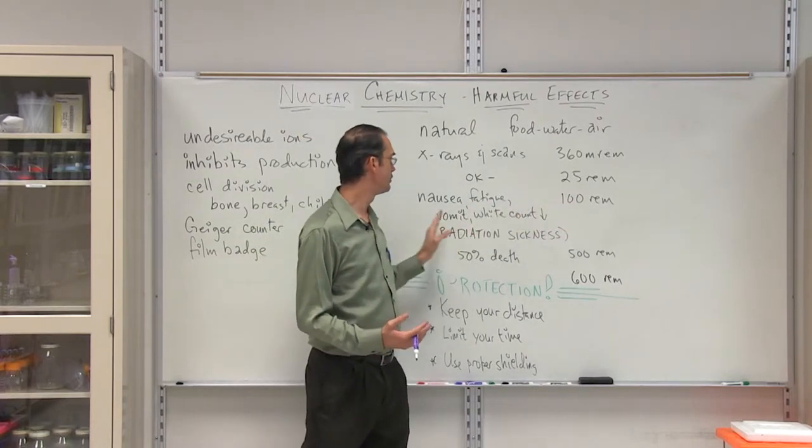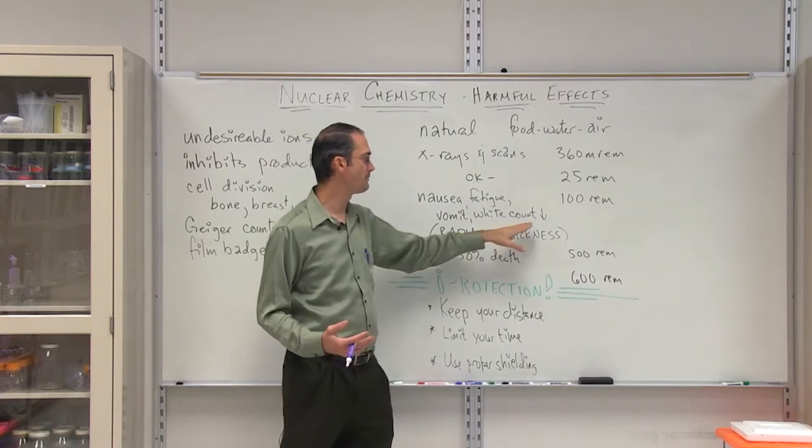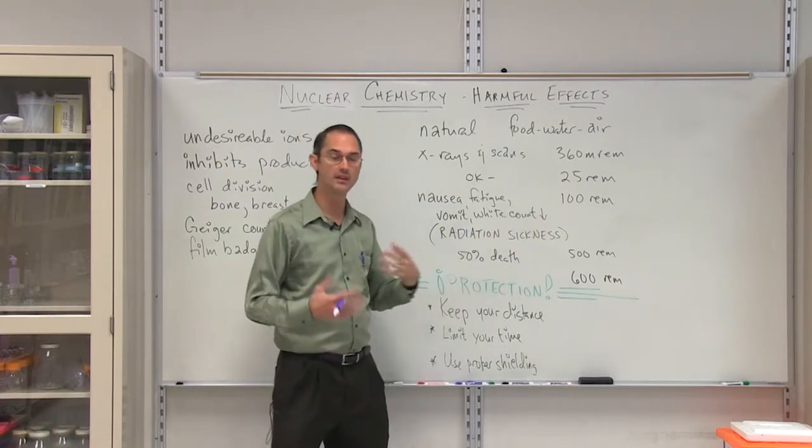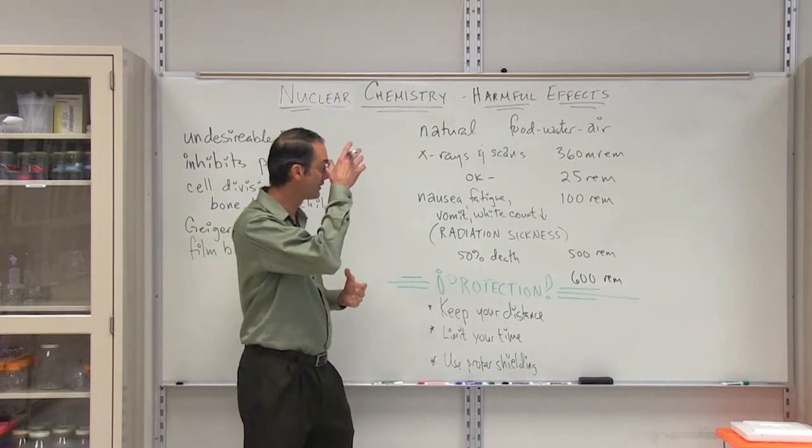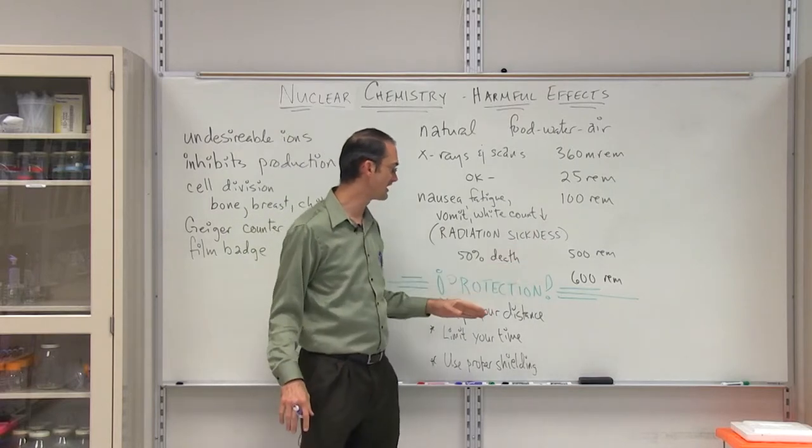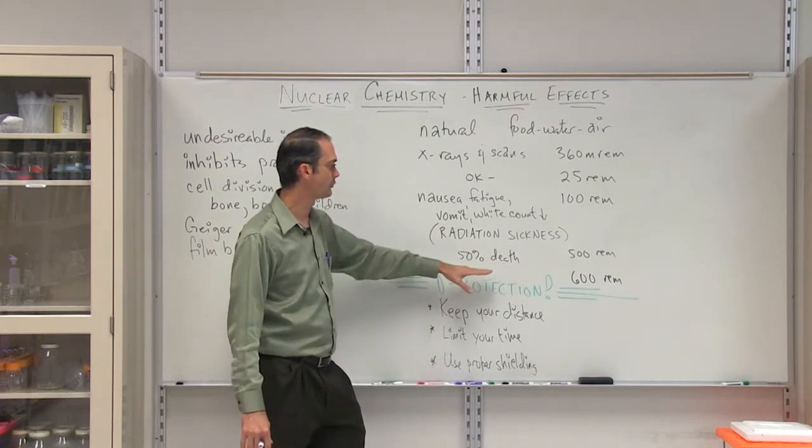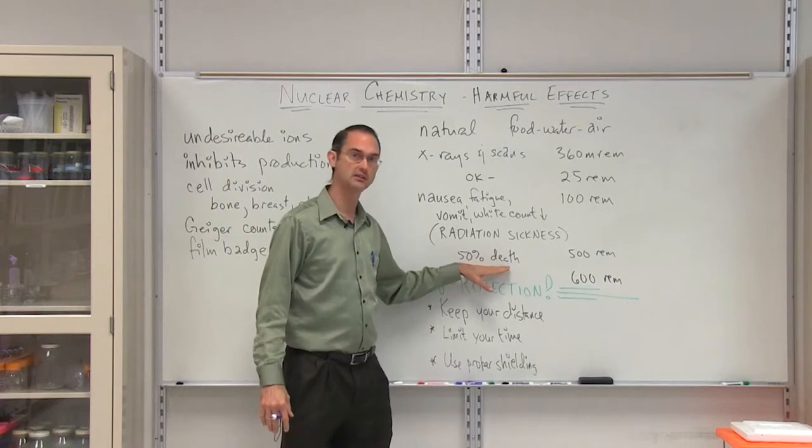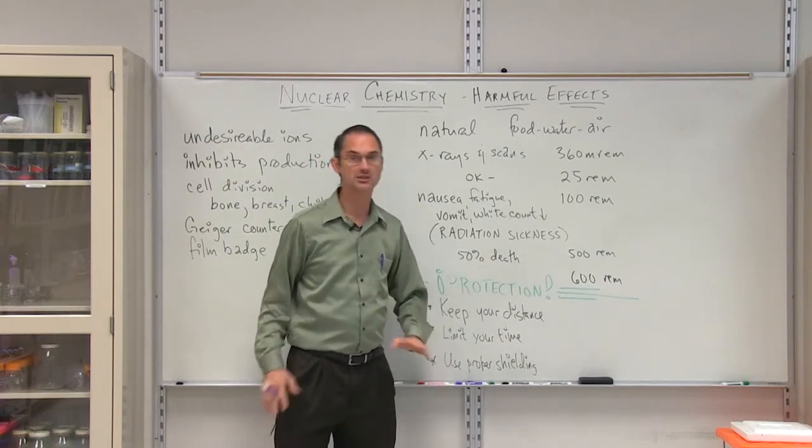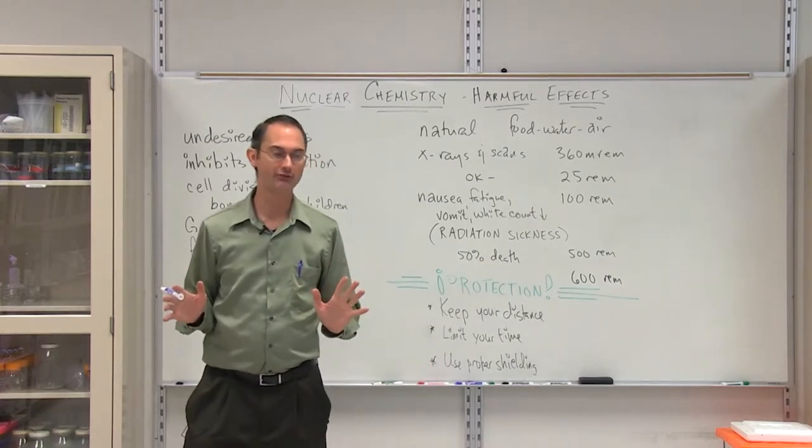At 100 REMs, you get nausea, fatigue, vomiting, and also your white blood count goes down, so the immune system is impacted there directly. This is what's called radiation sickness. Finally, if you are exposed to 500 REMs, that will give you a 50% chance of death. And at 600 REMs, that's it. That is the fatal dose.